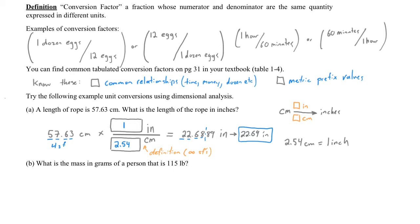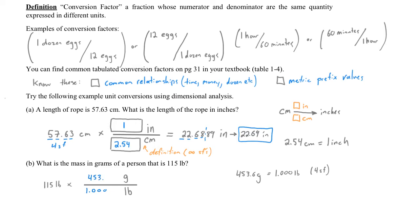What is the mass in grams of a person that is 115 pounds? Our starting point is 115 pounds and we need a conversion factor with pounds on the bottom and grams at the top. From the common conversions table on Canvas, there are 453.6 grams in one pound. This conversion factor is not exact — it is only known with 4 significant figures. So we have 1.000 next to pounds at the bottom and 453.6 next to grams at the top.